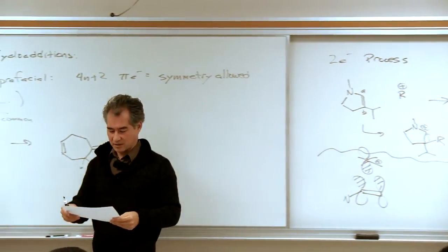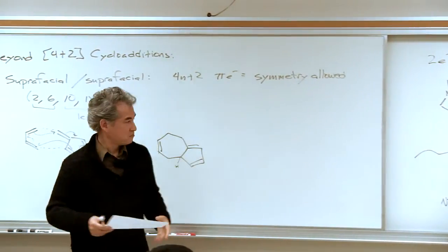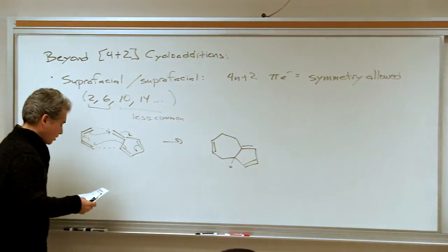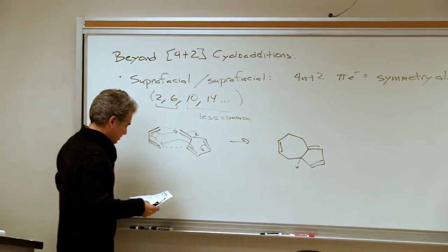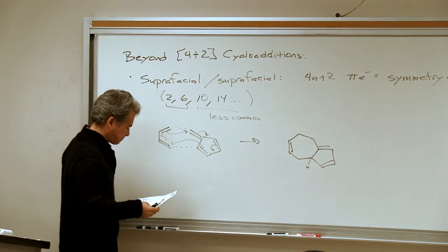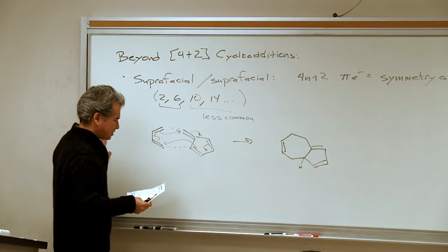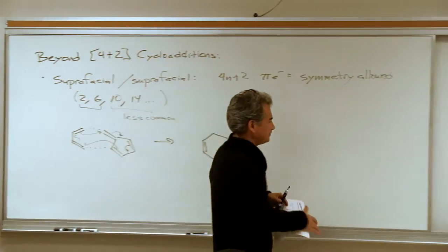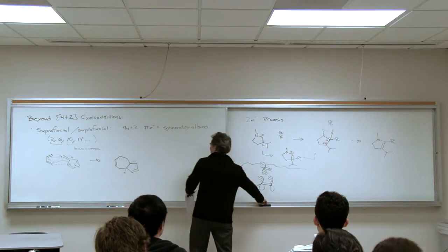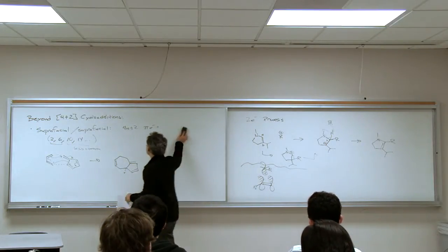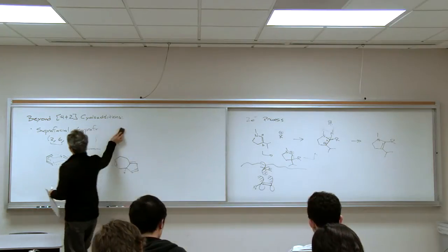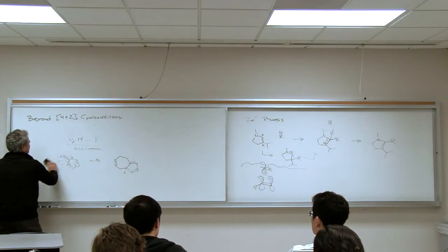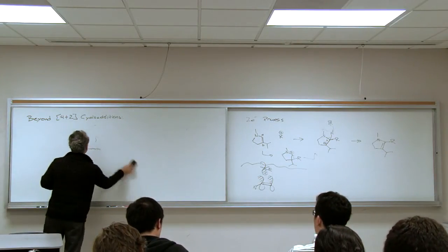Two-electron processes — simple additions of cations to alkenes — are very common. It's a cycloaddition whether you want to think about it that way or not. Let me mention some of the alternatives: what are some other higher-order or alternative processes to the classical 4+2 cycloaddition?